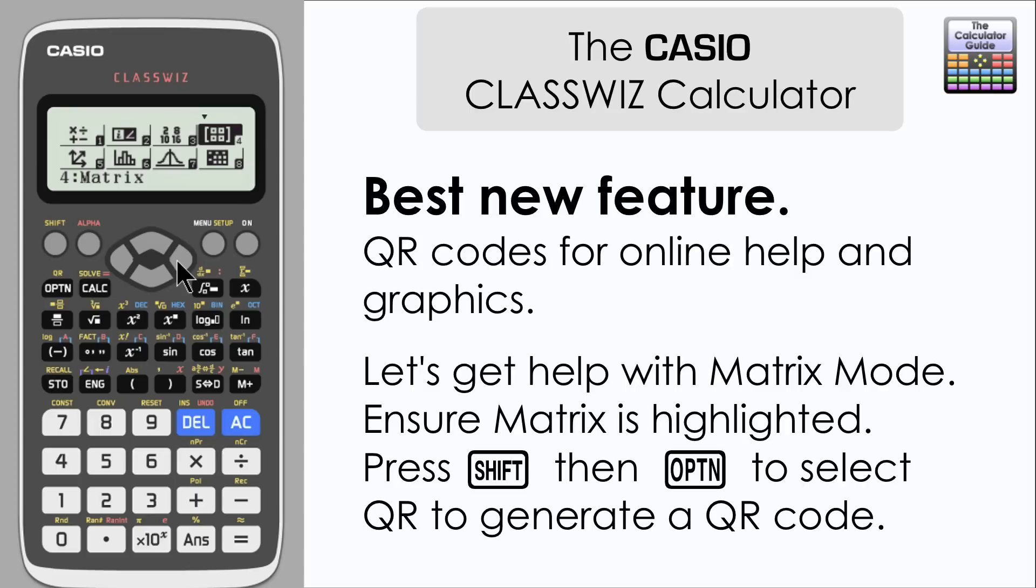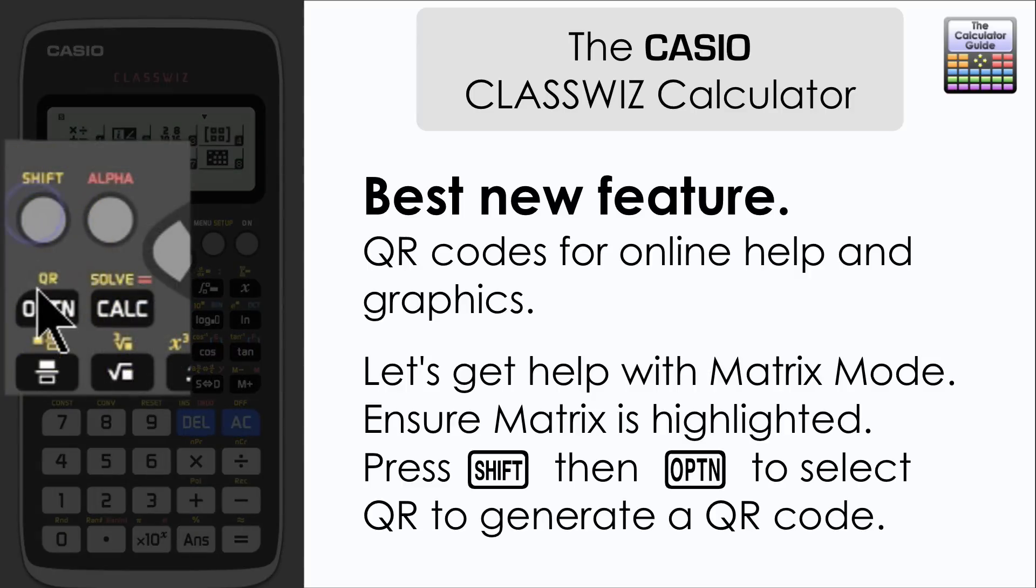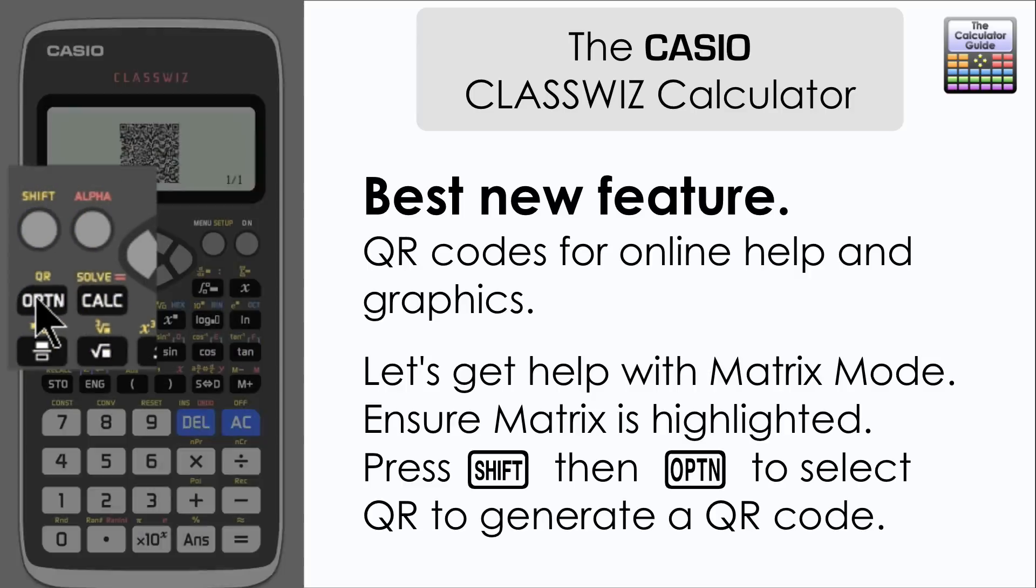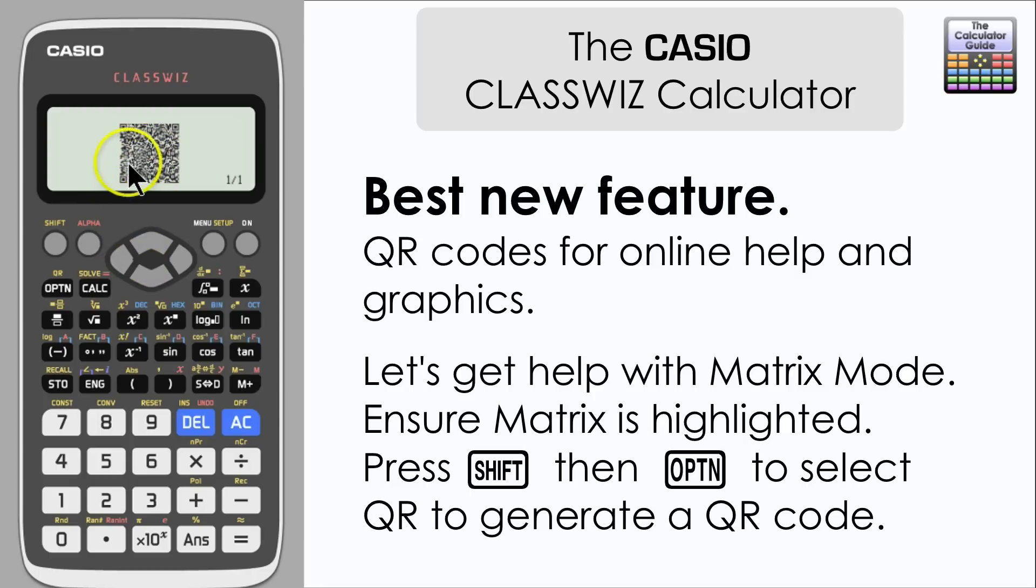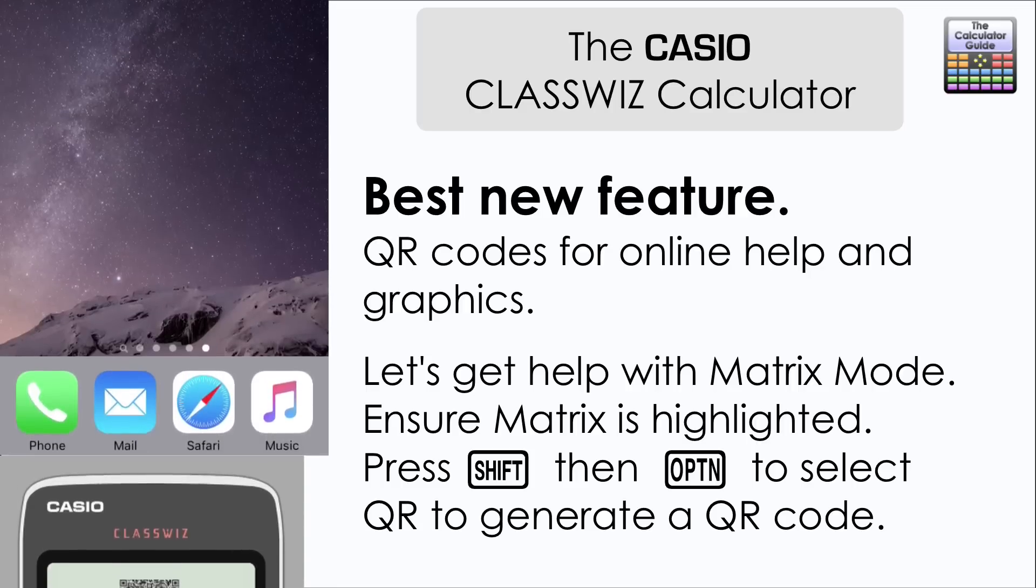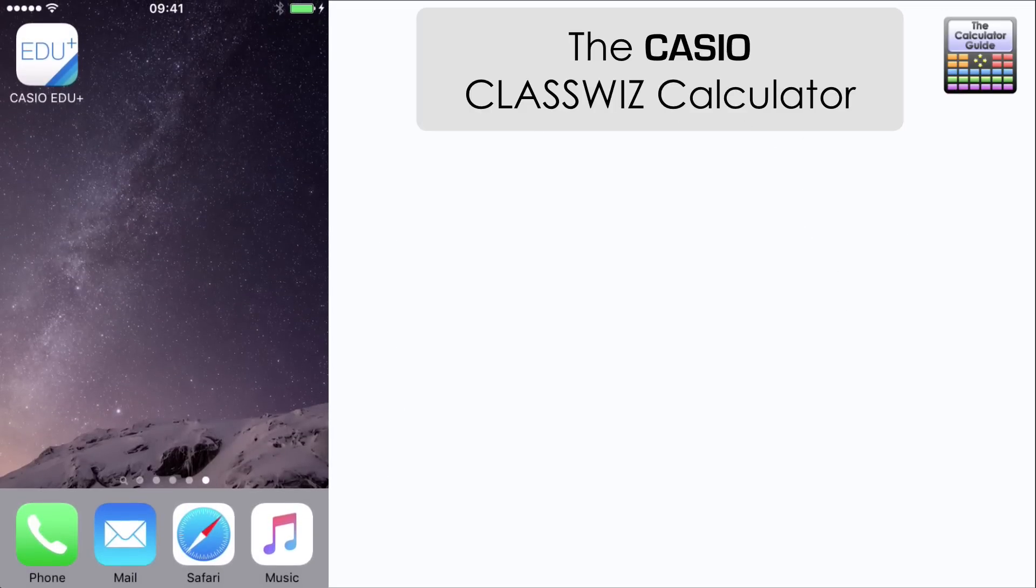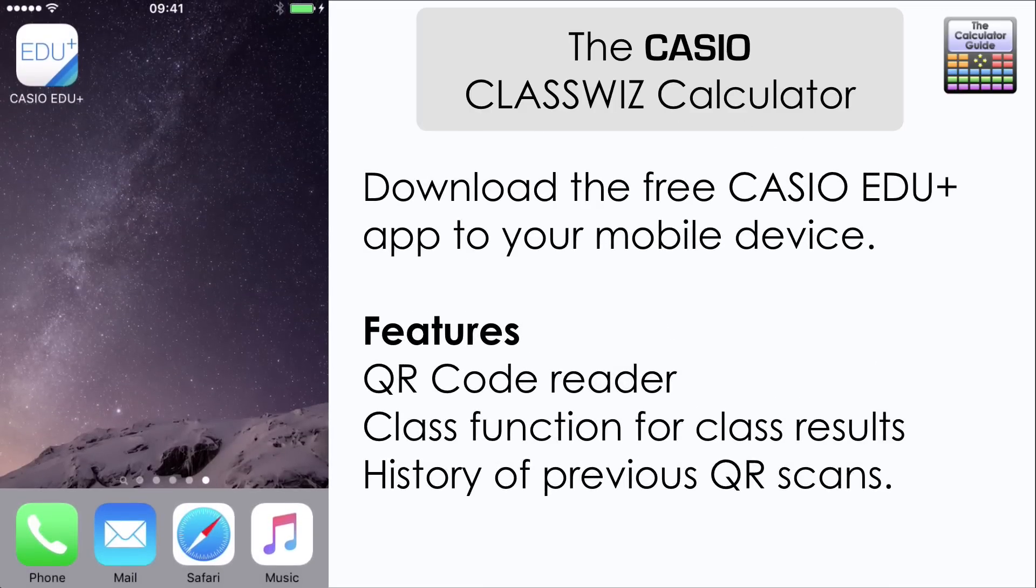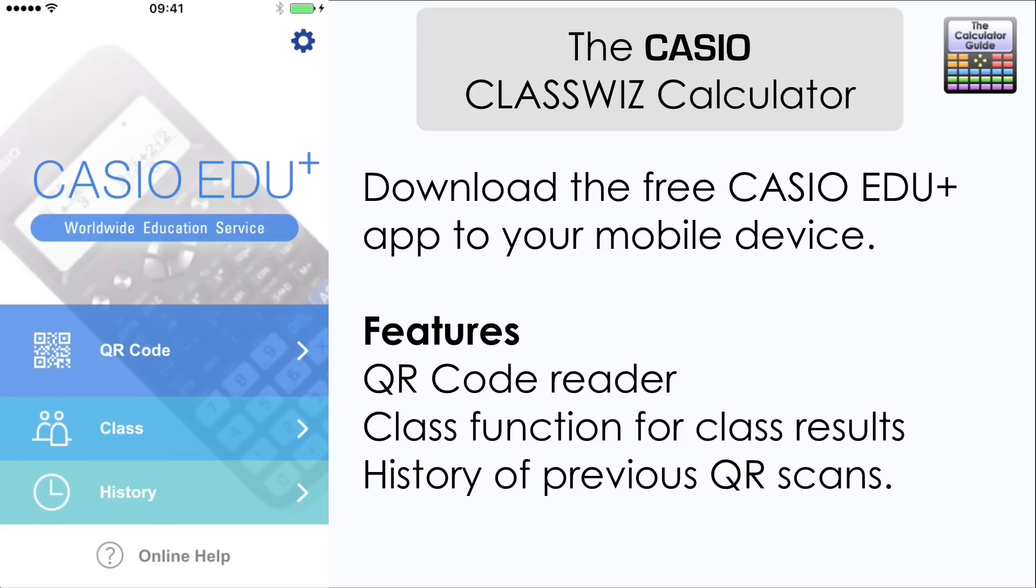So let's say we want help with matrix mode. Well if I press shift and then option, the calculator will produce a QR code. And what you can do is you can download the free Casio EduPlus app to your mobile device. And if we bring up the options here, we've got several options that you can choose from. To read the QR code, there's also some class functionality which is quite useful for teachers. There's also a history of your previous QR scans in there. So you can go back and take a look at things.